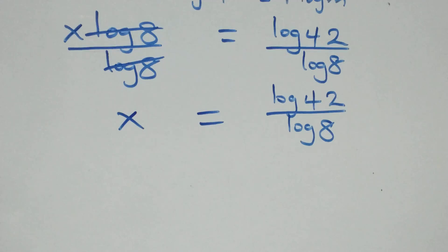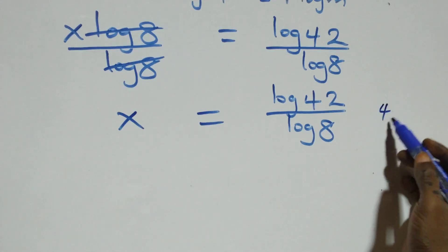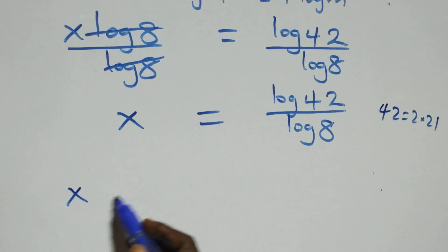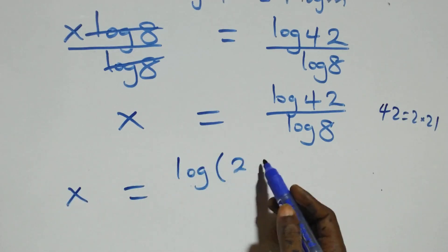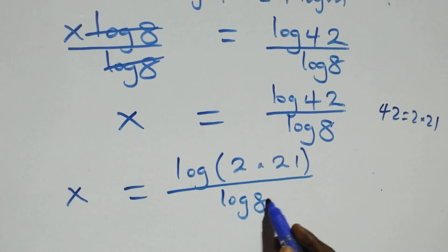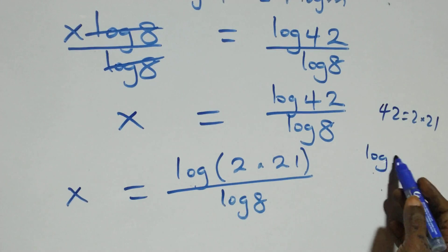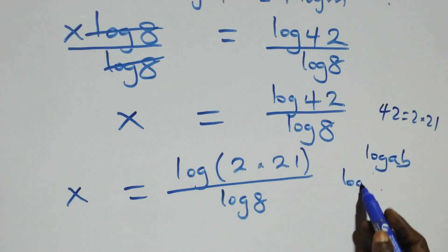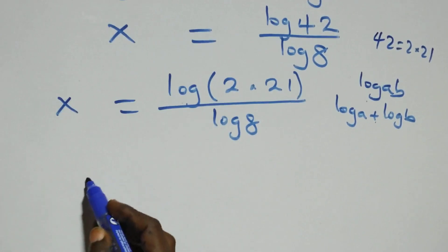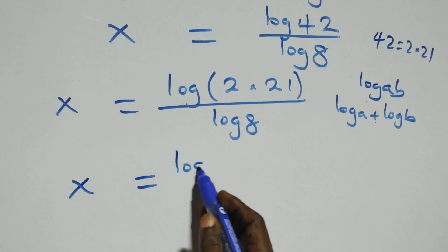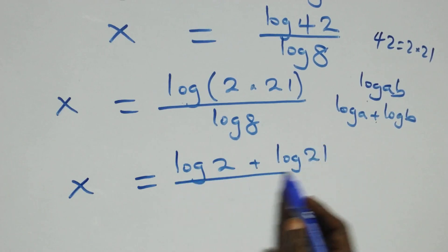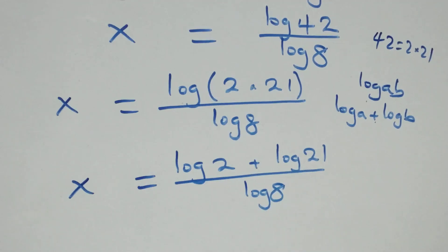We can express 42 as 2 times 21. So x equals log(2×21) over log8. This follows the log product rule: log(a·b) equals log(a) plus log(b). So x equals (log2 + log21) over log8.